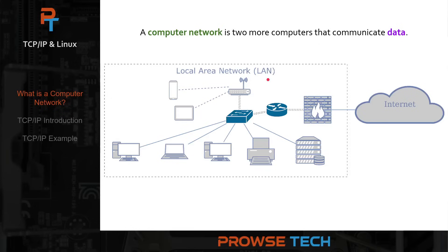We also have some servers and a printer. So this is a typical local area network, or LAN. All of these systems are just moving data back and forth — that's what they do. It's all about the data. Chances are you use systems within a computer network every day. This video is about connecting Linux systems together in a computer network.